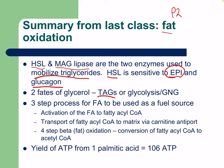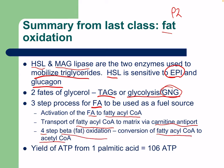There are two fates of glycerol: becoming triacylglycerols or entering glycolysis or gluconeogenesis. There are three steps for fatty acids to be used as a fuel source. First, activation of fatty acids to fatty acyl-CoA; second, transport of fatty acyl-CoA to the matrix via carnitine antiport; then a four-step beta oxidation converting fatty acyl-CoA to acetyl-CoA.